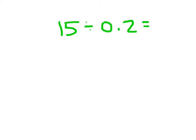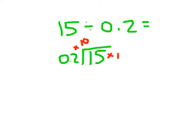Let me show you another problem. Here we have 15, which is still a whole number, divided by 0.2. We're going to look at our divisor — since there's one decimal place, we'll multiply by 10. If there were two decimal places, we'd multiply by 100 to clear the decimal places. So we multiply by 10 there and multiply the dividend by 10 as well. Rewriting it, we have 150 divided by 2. 150 divided by 2 is 75.